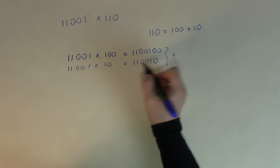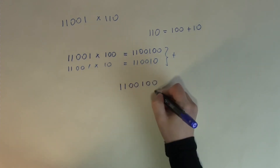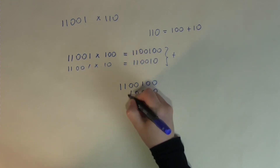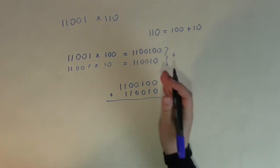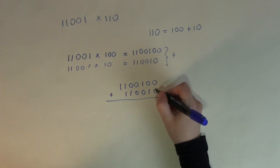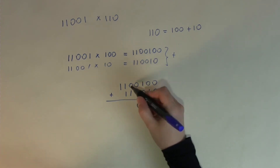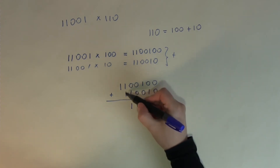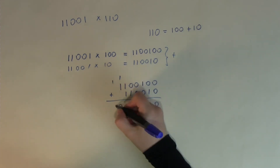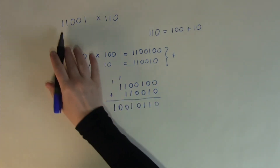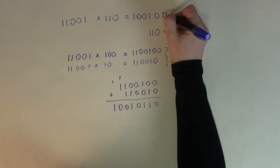Now add the two together — I need to copy them down first because they're not lined up properly, making sure smallest place values are under each other. 0+0=0, 0+1=1, 1+0=1, 0+0=0, 0+1=1, 1+1=0 carry 1. There's nothing else to add, so copy the 1 down. The solution for this multiplication is 10010110.